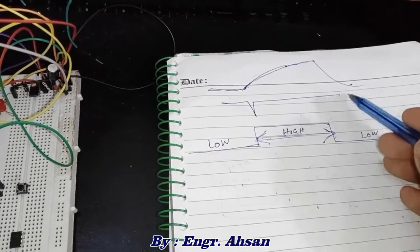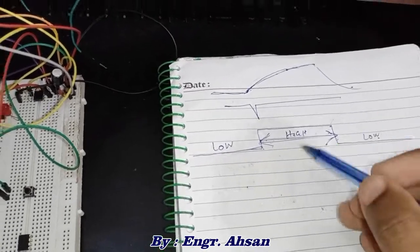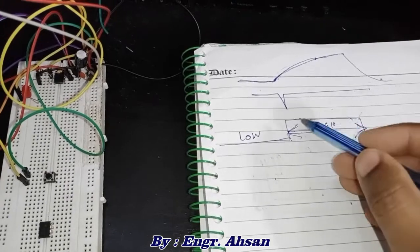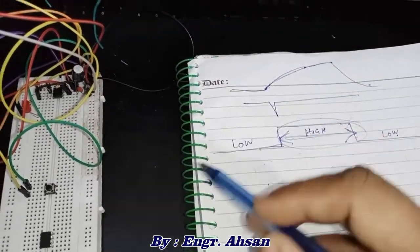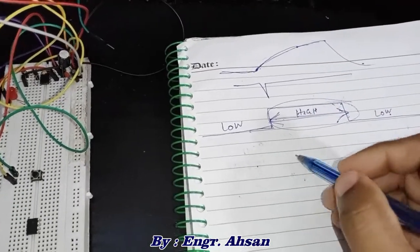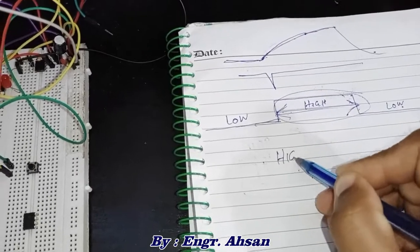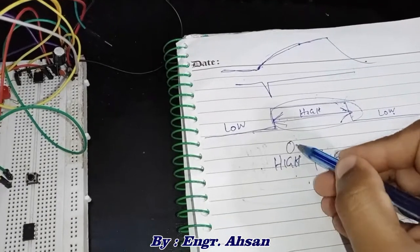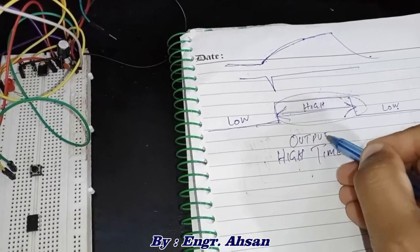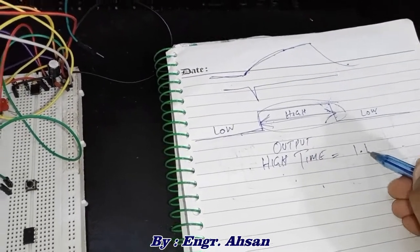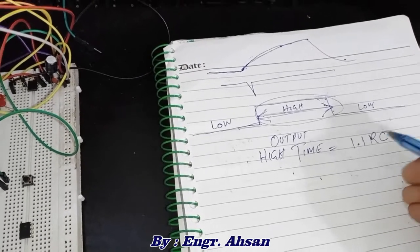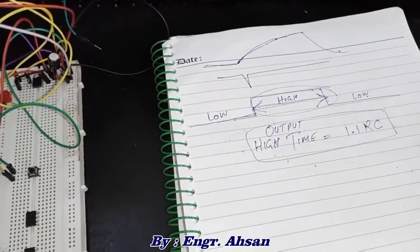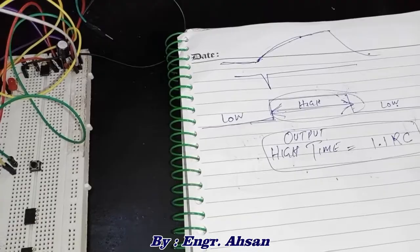The question is, how can you set this high time? The formula is: output high time equals 1.1 times RC. This is the formula, 1.1 times RC.